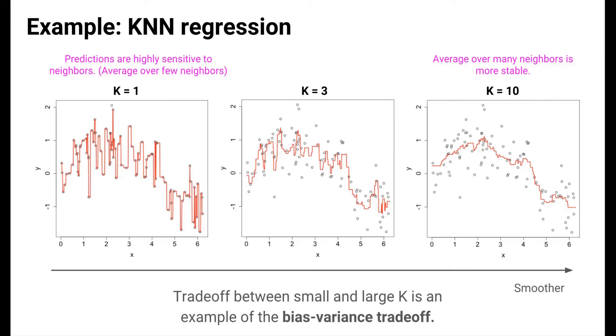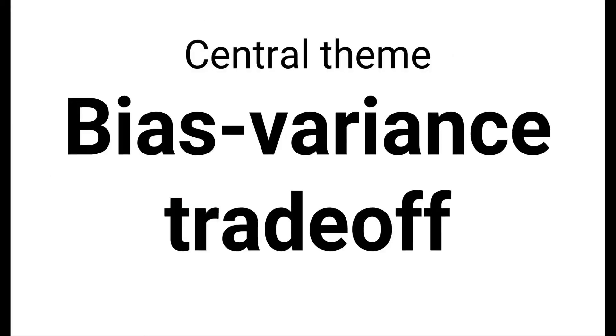The difference between small and large k is a classic example of a phenomenon in machine learning called the bias-variance tradeoff. The bias-variance tradeoff is a hugely important theme in machine learning and provides a conceptual framework for thinking about tuning parameters and machine learning methods. Let's discuss this tradeoff in more detail.